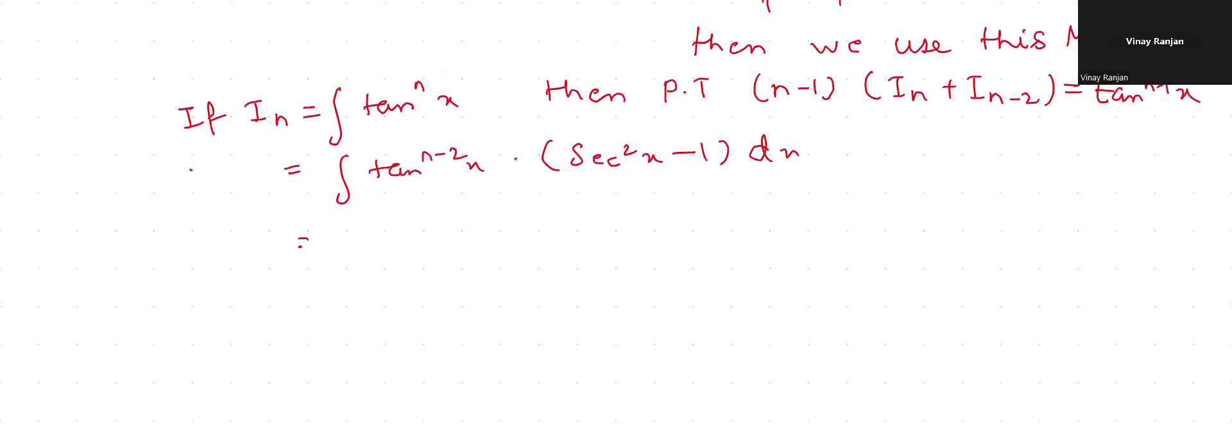Now you can split it, so this will be equals to tan^(n-2)x into sec square x dx, minus tan^(n-2)x dx.